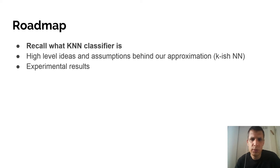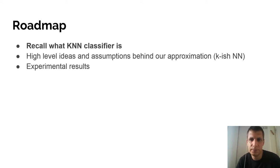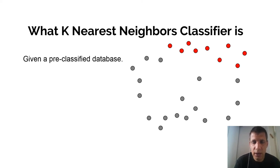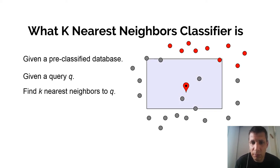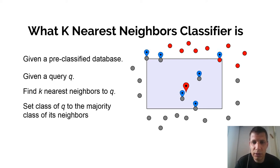Let's recall what KNN classifier is. We are given a database of points, in this case in two dimensions. Each of the points is classified as red or gray. Then we are given a query point Q that we wish to classify. We do that by finding the K nearest neighbors — in this case K is 6 — using the L1 norm, and we set the class of Q to be the majority class of its neighbors.